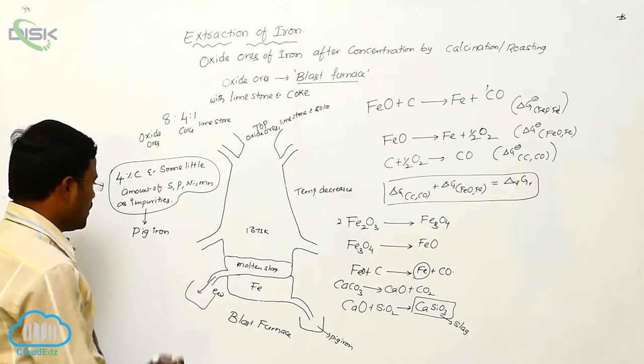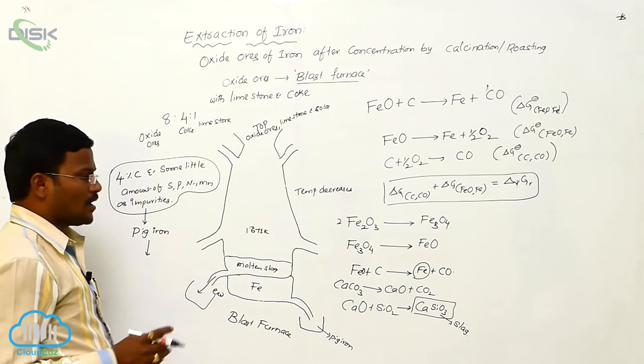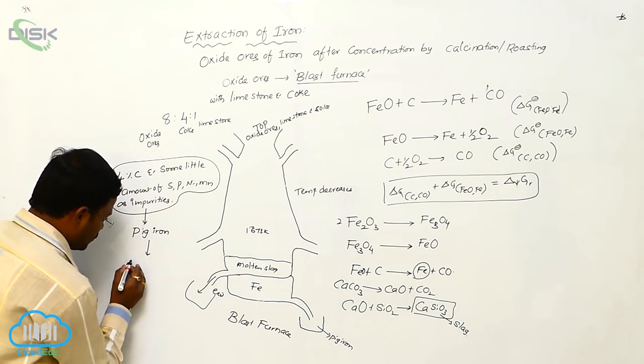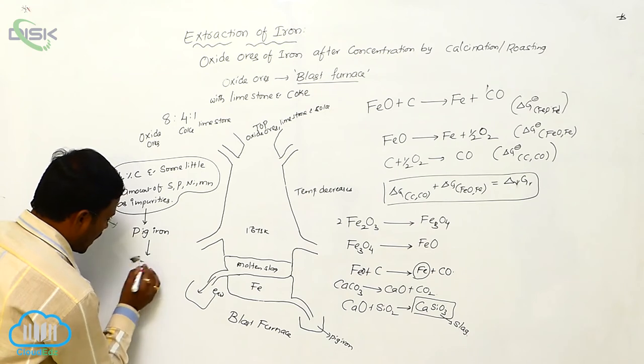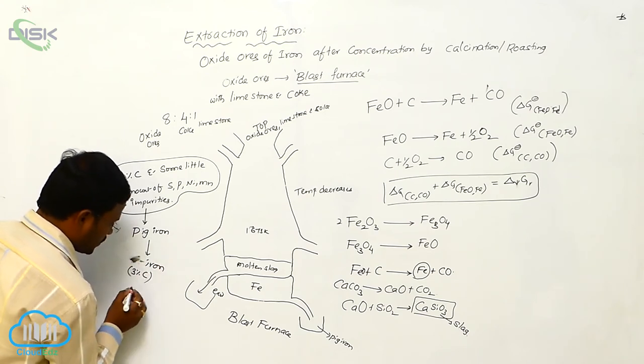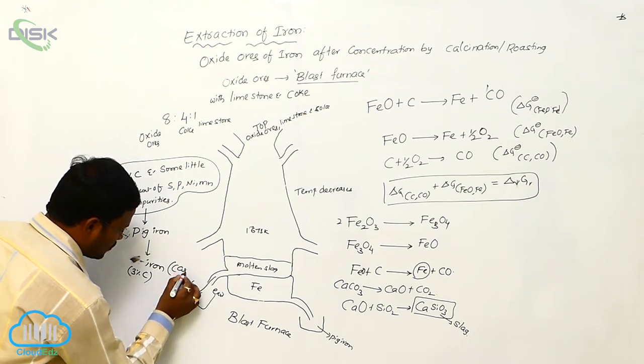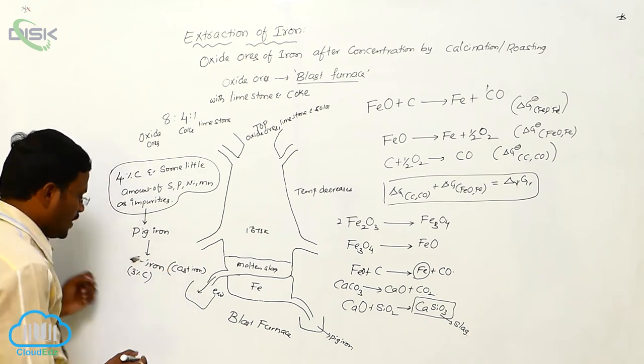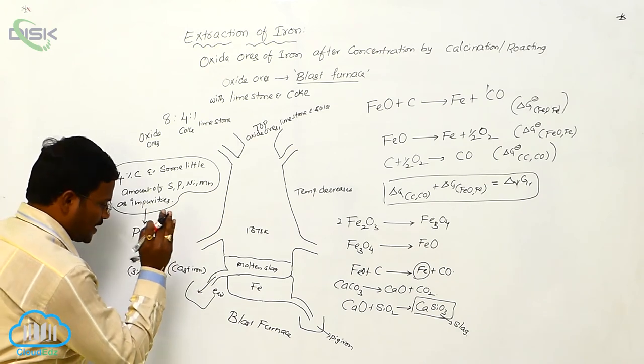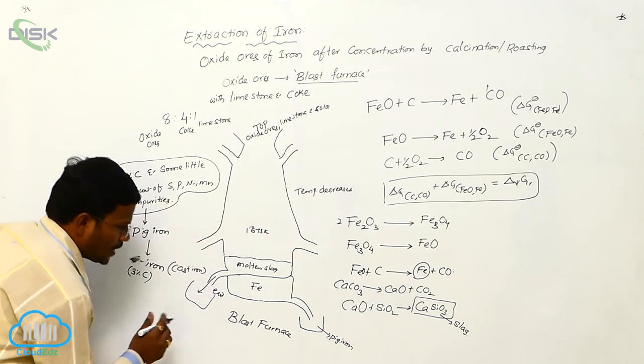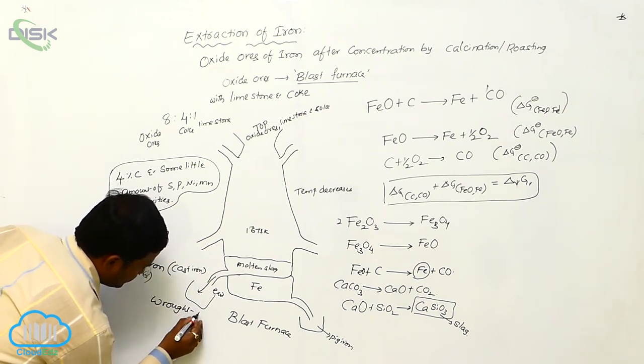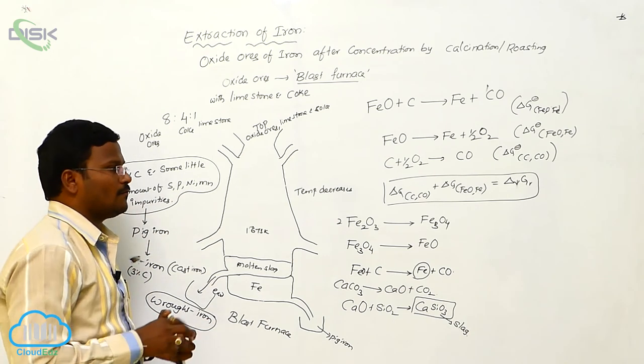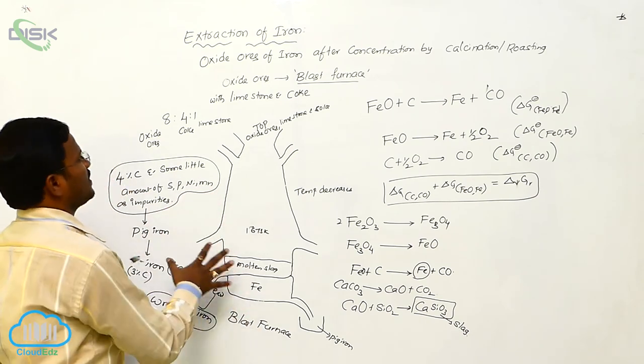This pig iron, when heated, when hot flames are applied onto it, is converted into iron which consists of 3% of carbon. At this condition, that iron is called cast iron. The industrially most important iron available for us is wrought iron. It is used in the manufacturing of various types of poles or industrial equipment. This is extraction of iron.